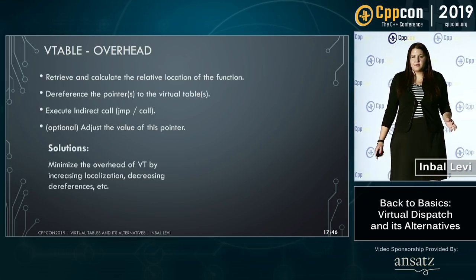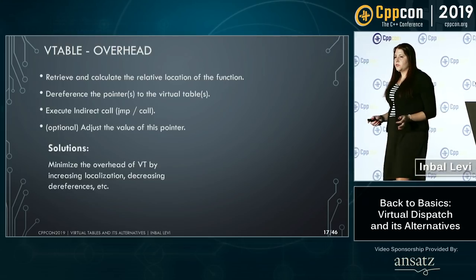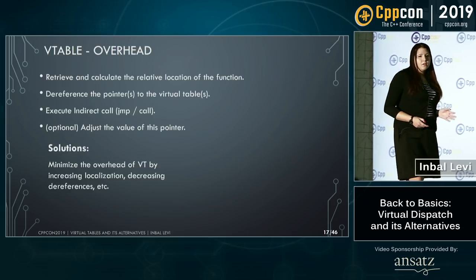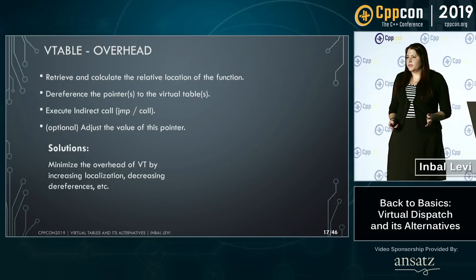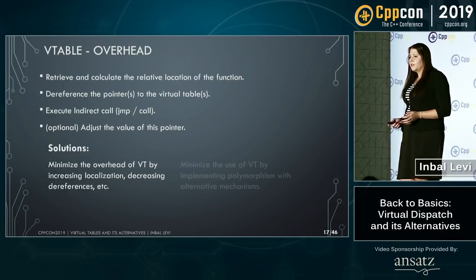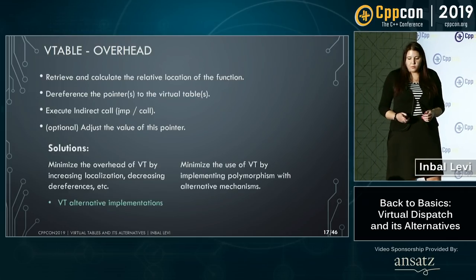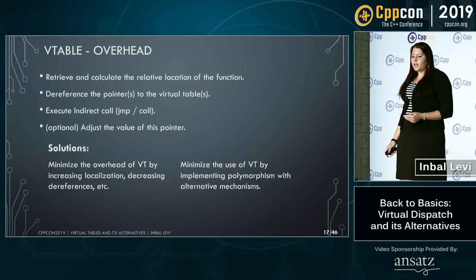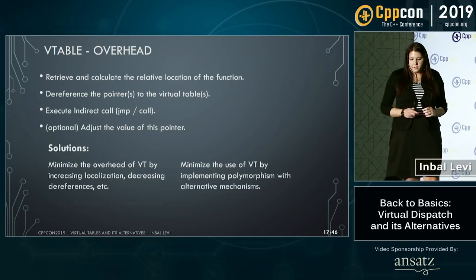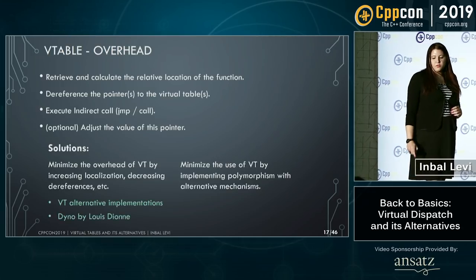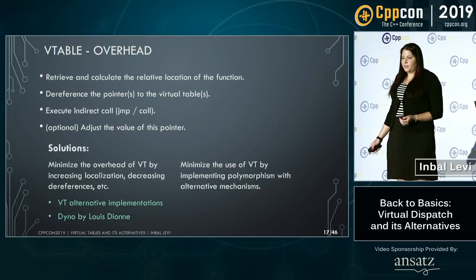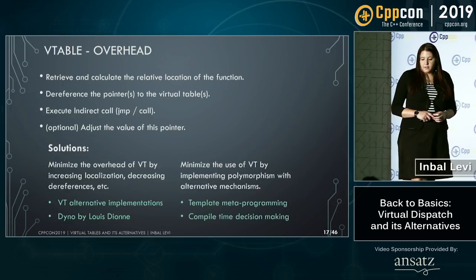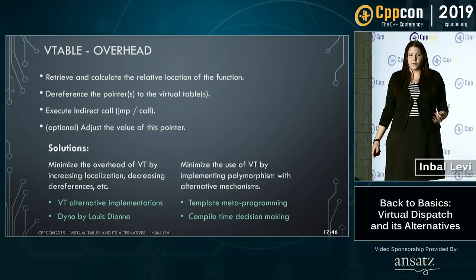The overhead of using the virtual table is to retrieve and calculate the location of the function, since we have to do a few dereferences. Then there's the indirect call itself. Currently there are two major approaches to solve it: first, minimize the overhead of the virtual table by increasing localization and decreasing references; second, minimize the use of the virtual table by implementing polymorphism and passing dispatch to compile time. An example of the first is Dino by Louis Dion. Template metaprogramming is what we'll focus on.